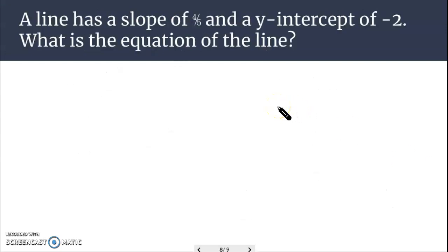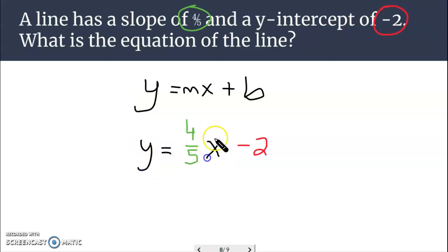Look at this problem. A line has a slope of 4/5 and a y-intercept of negative 2. What's the equation? Okay. So, y equals mx plus b, our slope-intercept form of a line. The m, the slope, is 4/5. I'll put that in for m. The y-intercept is negative 2. That's the b number. And I'm going to leave everything else alone. The y equals sign in the x. y equals 4/5x minus 2.